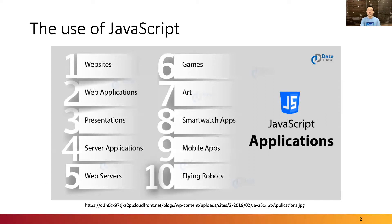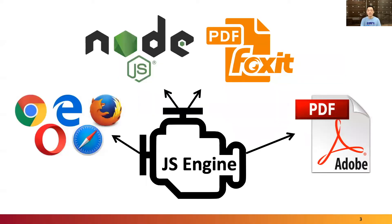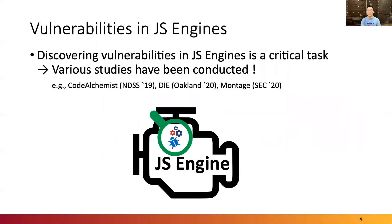The use of JavaScript has expanded beyond web browsers into the entire computing ecosystem. Now it is used as a general-purpose programming language, and a lot of commercial software contains JavaScript engines. Naturally, JavaScript engines are being heavily studied, fuzzed, and hardened because vulnerabilities in JavaScript engines can be a critical security issue.